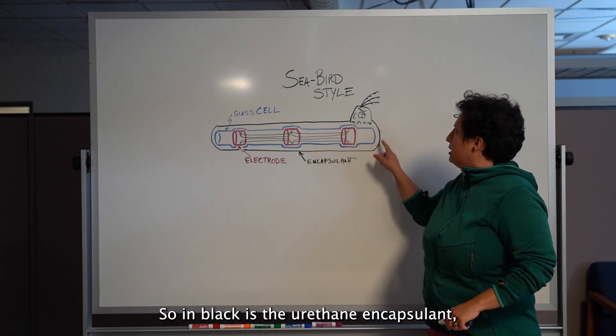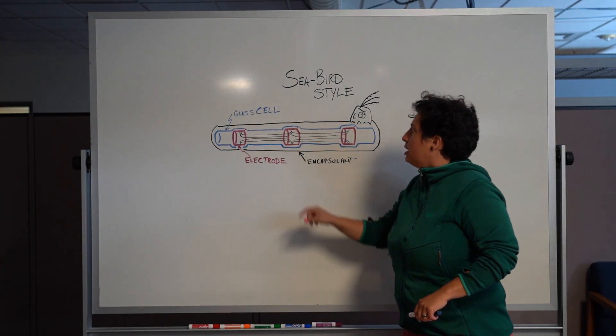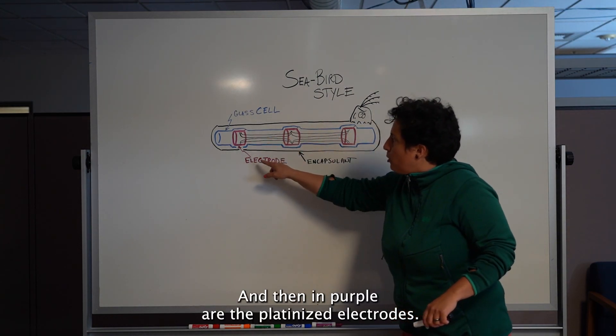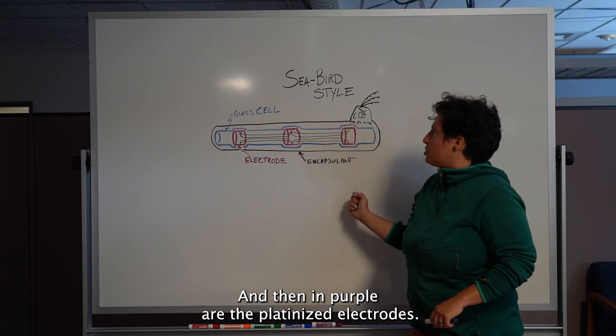So in black is the urethane encapsulant, in blue is the borosilicate glass cell, and then in purple are the platinized electrodes.